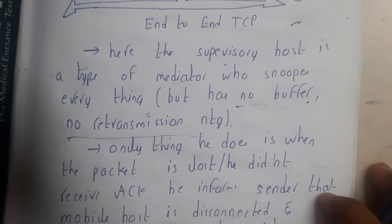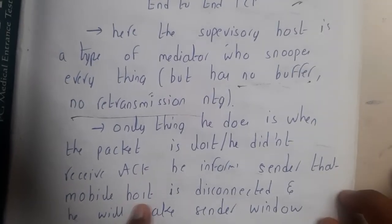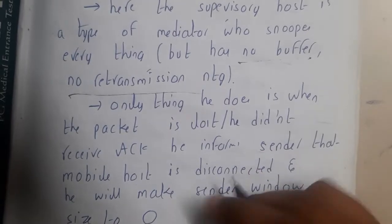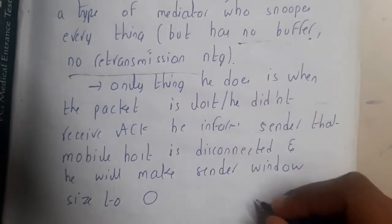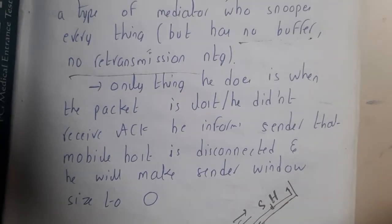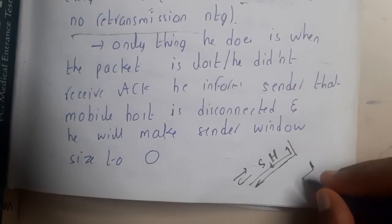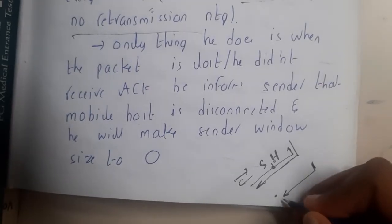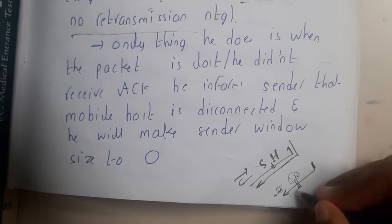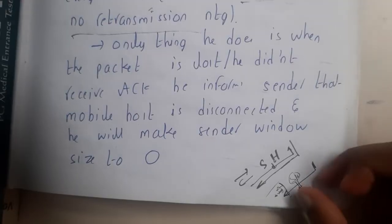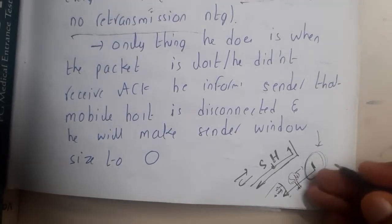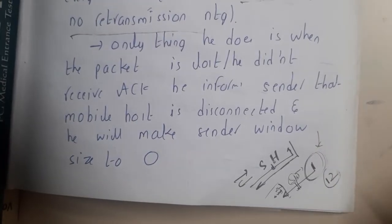When a packet is lost and the supervisor did not receive an acknowledgement, it informs the sender that the mobile is disconnected and makes the sender's window size zero. Assume the sender sent a packet and it was received by the receiver, but the acknowledgement was not sent back. In that situation the Supervisory Host did not observe the acknowledgement passing through, so it will say the device has been disconnected and forcefully stop the transmission from the sender side. Assume the sending window size was 12 when it was stopped.